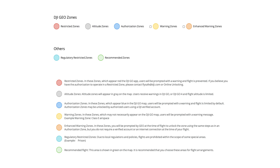There are eight different DJI geofencing zones: red for restricted zones, gray for altitude zones, blue for authorization zones, yellow for warning zones, orange for enhanced warning zones, a mauve/aqua color for regulatory restricted zones, and green for recommended zones. Red is a no-go — in the red area, the Go app warns you and flight is prevented. Your drone will hit that fence and stop, which can be dangerous if your battery runs out mid-operation.